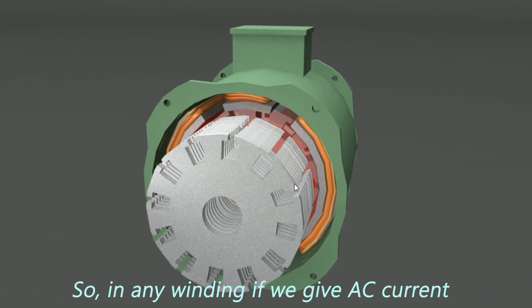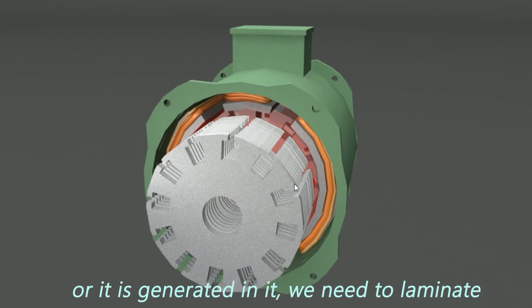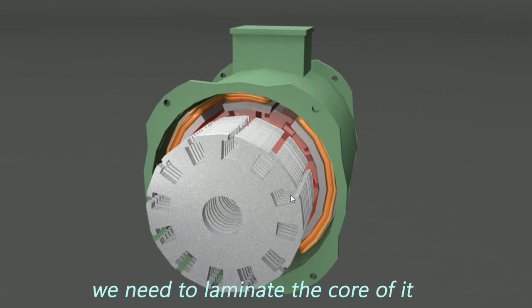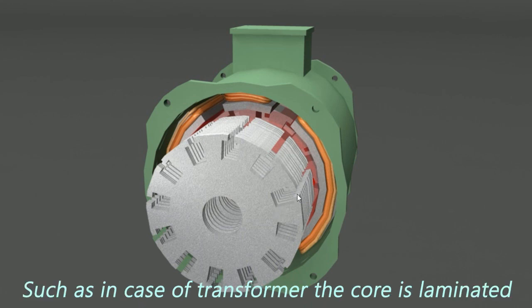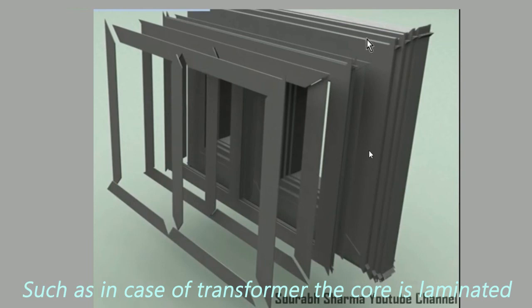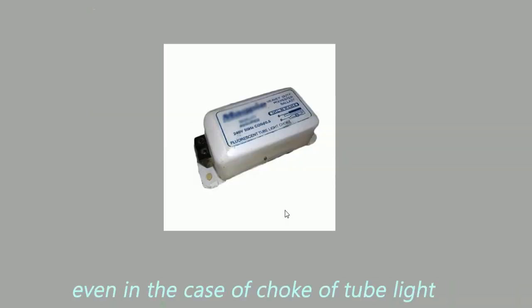So, in any winding, if we give AC current, or it is generated in it, we need to laminate the core of it. Such as, in case of transformer, the core is laminated. Even in the case of choke of tube light.